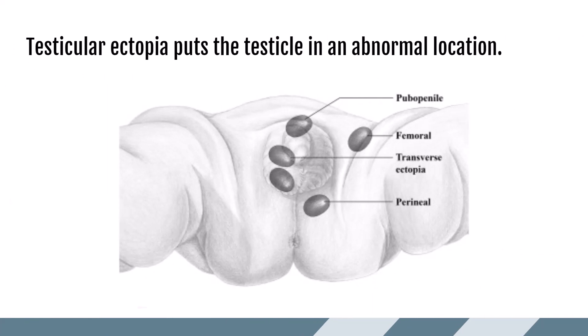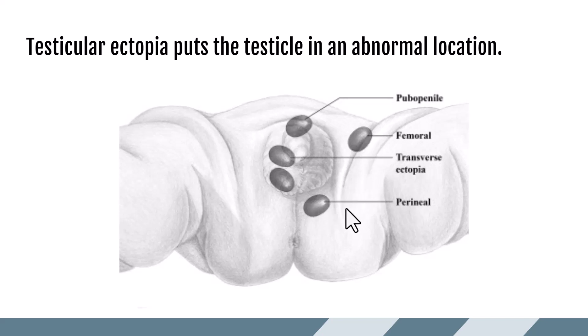Similar to cryptorchidism is testicular ectopia, which puts the testicle in an abnormal location. Normal location is in the scrotum with the poles of the testicle oriented in the superior to inferior position. Testicular ectopia can put the testicle in the scrotum in a more transverse position, or in areas that do not connect through the normal path down the inguinal canal — such as at the base of the penis, into the leg, or into the perineal area. Correcting testicular ectopia from these locations is more involved, as it requires more rerouting to get the testicle into the scrotum.